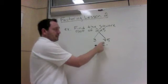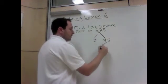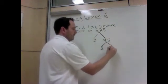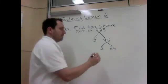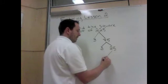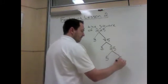Now 75, 7 plus 5 is 12. 12 divides by 3, so this will divide by 3. And it's 3 times 25. 25 is divisible by 5 and 5.